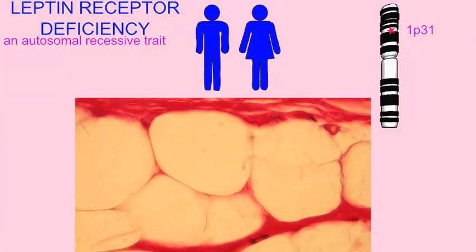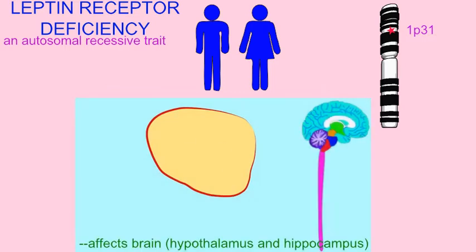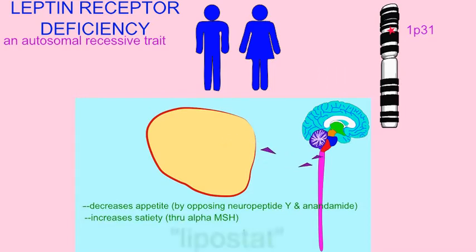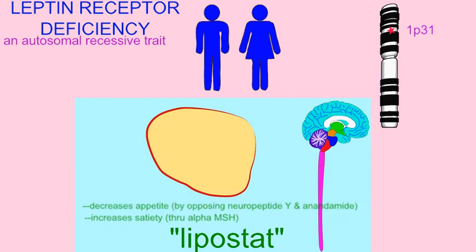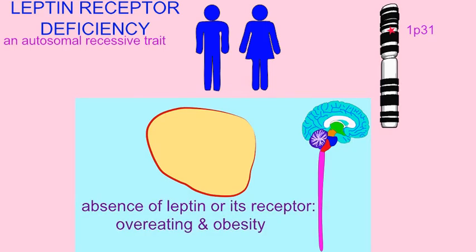Adipose tissue produces the hormone leptin as a signal that adipose exists, so that the brain can be aware of the amount of energy stored as it determines whether or not to generate the sensation of hunger. If one does not make the hormone leptin, this promotes a genetic disorder involving overeating since the brain is not aware of the body's energy reserves.